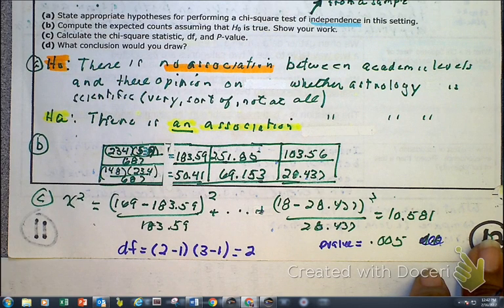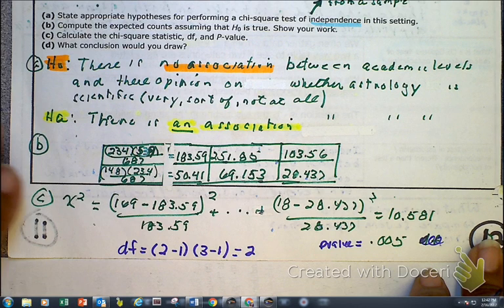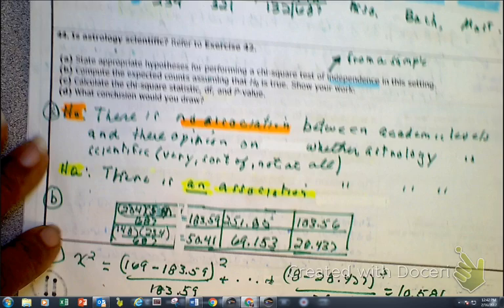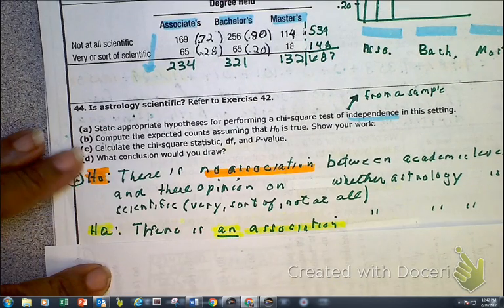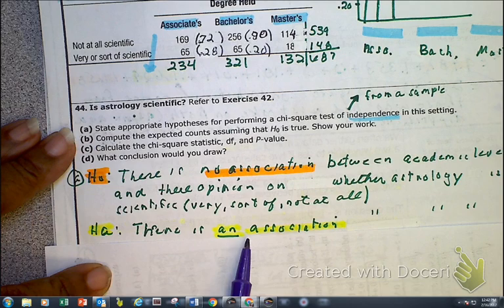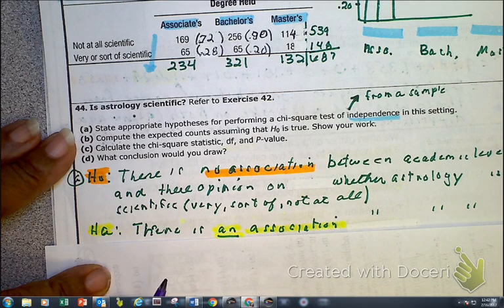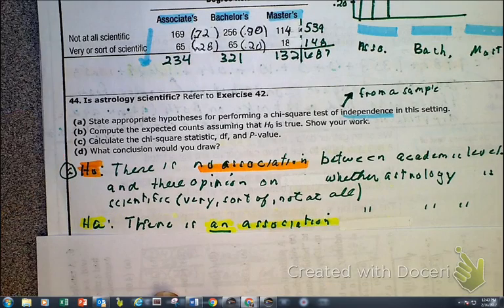And one more thing, though, before I say TTFN, please notice the differences. Oh, there wasn't much, except for the null hypothesis and the alternative hypothesis. And then, of course, your conclusion is always based on those two. Okie dokie. TTFN. Ta-ta for now.